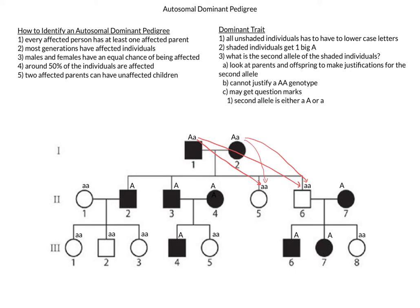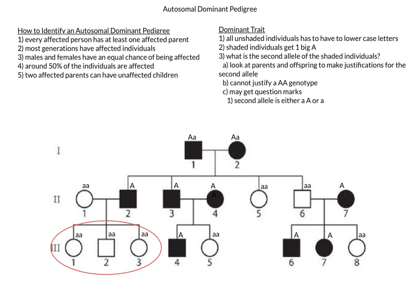This then also justifies individual 1-2 as heterozygous due to the same reasoning. Moving on to individual 2-2: this individual does have parental information, but since both parents are expressing the trait, it does not help us in figuring out the second allele. So let's look at the kids instead. All of individual 2-2's three children are homozygous recessive, which means they would all have had to receive a recessive allele from both the mom and dad. As such, individual 2-2, the father in this case, would have to be heterozygous to be able to express the trait and still pass on the recessive allele.